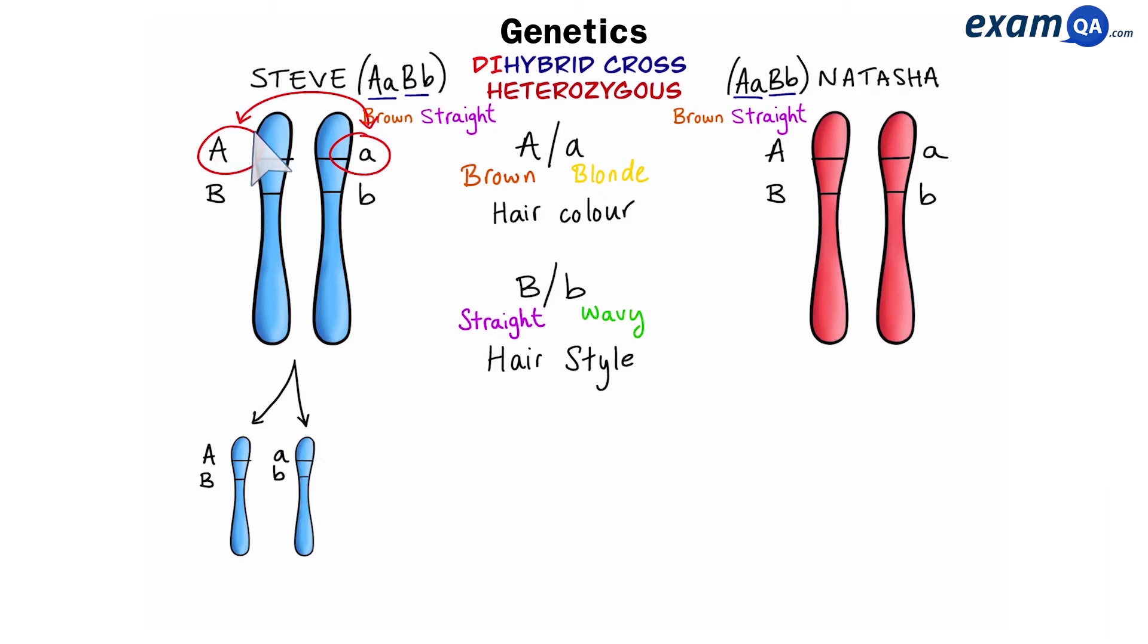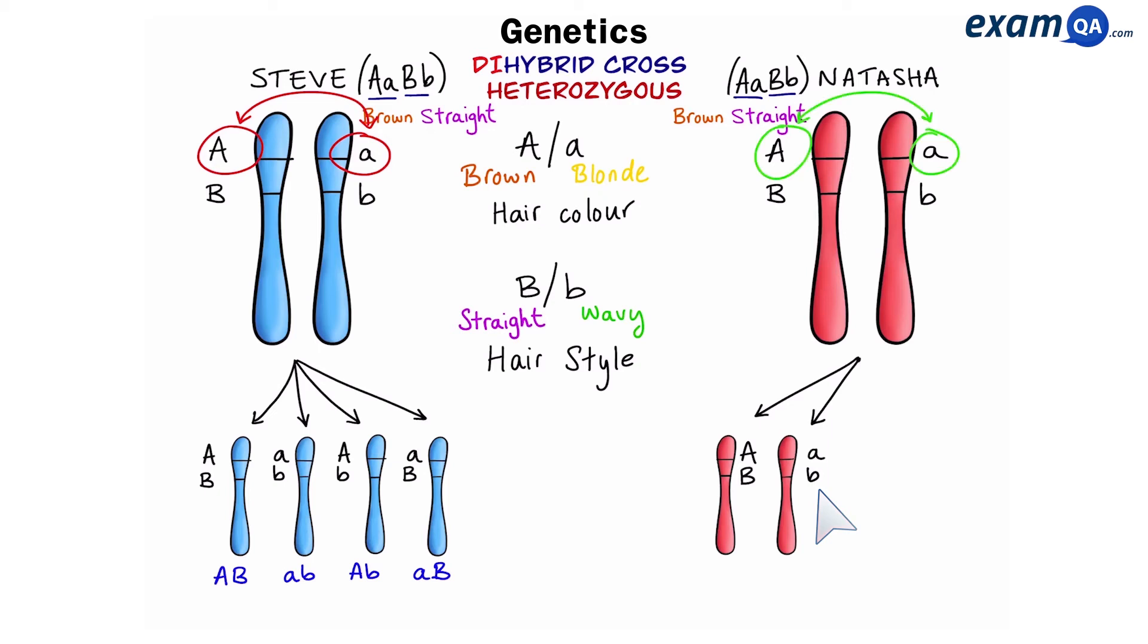However, we know that during meiosis 1, crossing over occurs, and this causes alleles to change chromosomes, meaning that we can produce new combinations, such as big A with small b, and small A with big B. So, these are all the chromosomes that will be found in Steve's gametes. We get the following for Natasha, and again, because of crossing over, we're going to get these two combinations as well. And these are all of the possible combinations that Natasha can produce.